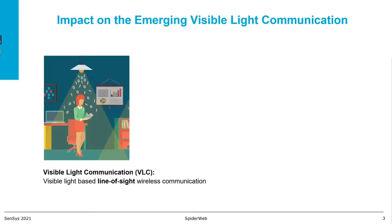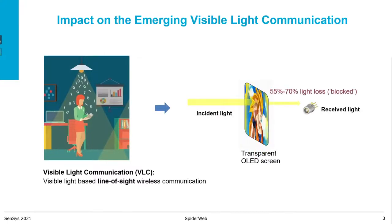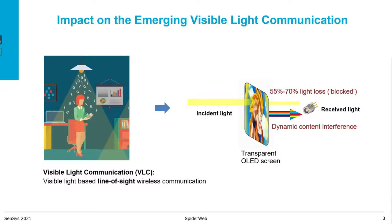In VLC, the screen will become a blocker for the signal receivers, reducing the signal quantity greatly. Moreover, the signals are interfered with by the screen light. This makes intensity-based modulation not suitable in through-screen VLC.